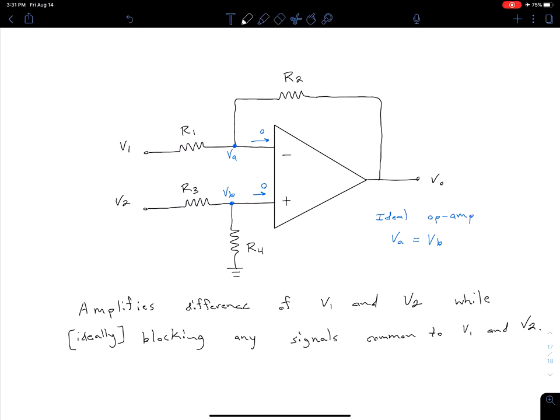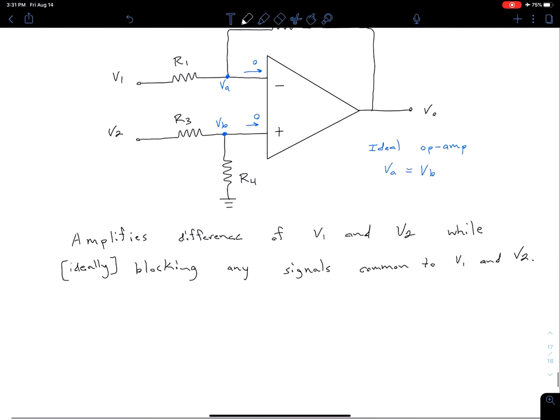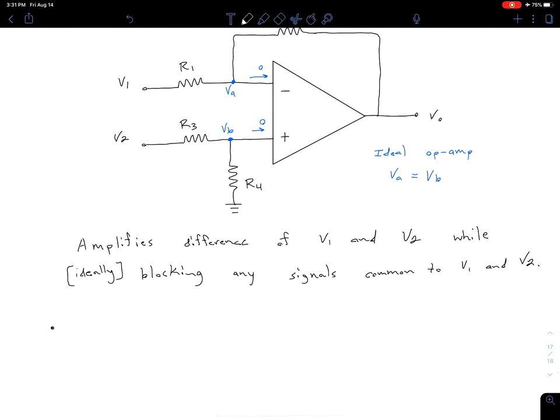We're going to start our analysis by doing KCL at node A there, as well as KCL at node B. And then we're going to use this relationship of VA equals VB to work our way towards a general expression. So first, let's start by doing our KCL at node A.